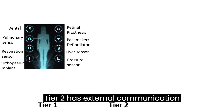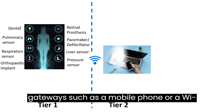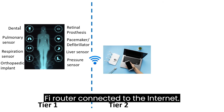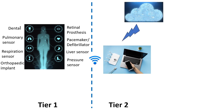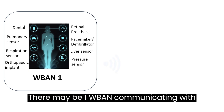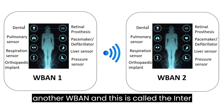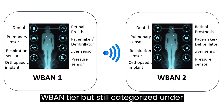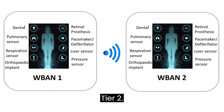Tier 2 has external communication gateways such as a mobile phone or a Wi-Fi router connected to the internet. There may be one W-BAN communicating with another W-BAN, and this is called the inter-W-BAN tier, but still categorized under Tier 2.